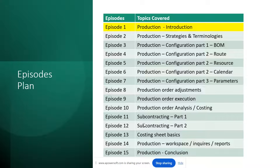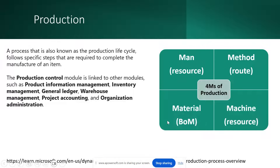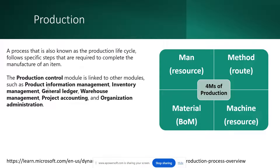Production, also known as the production lifecycle, is a process consisting of a specific step-by-step process required to complete the manufacture of an item — whether you manufacture a car, laptop, furniture, or fabric. It has a series of steps and operations, and raw materials are consumed. The production control module is also linked to other modules such as product information management, general ledger, inventory management, and warehouse management, so it is not a standalone module.